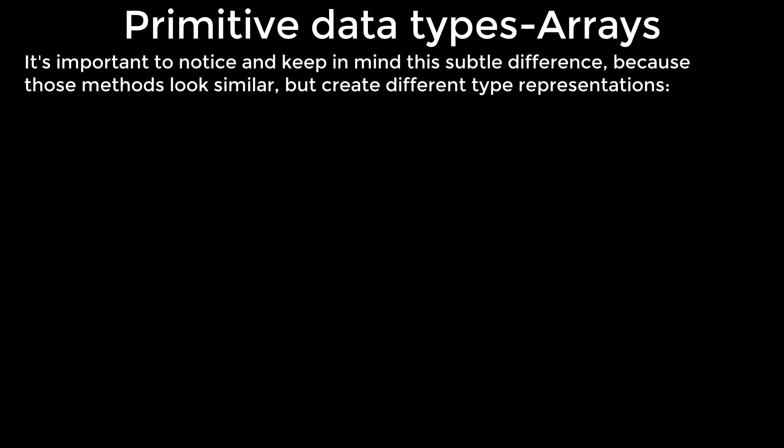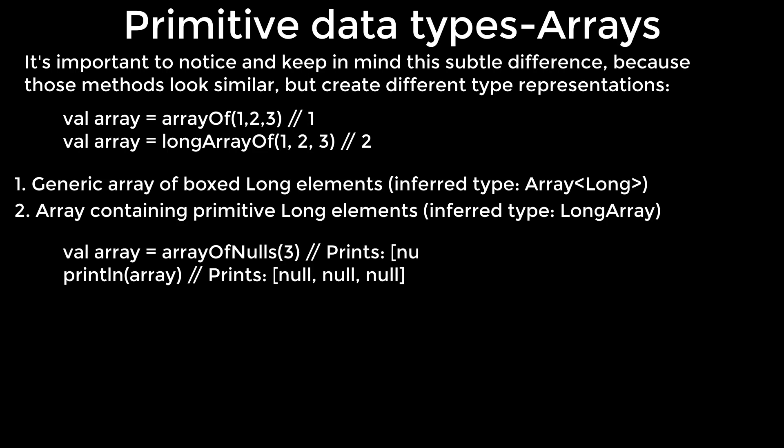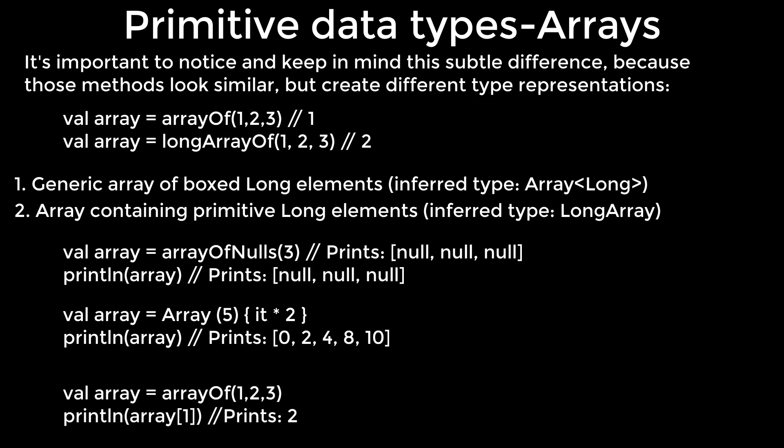It's important to notice and keep in mind this subtle difference because those methods look similar. We can create different type representations: one, generic array of boxed long elements; two, array containing primitive long elements. Knowing the exact size of an array will often improve performance, so Kotlin has another library function arrayOfNulls that creates an array of a given size filled with null elements.